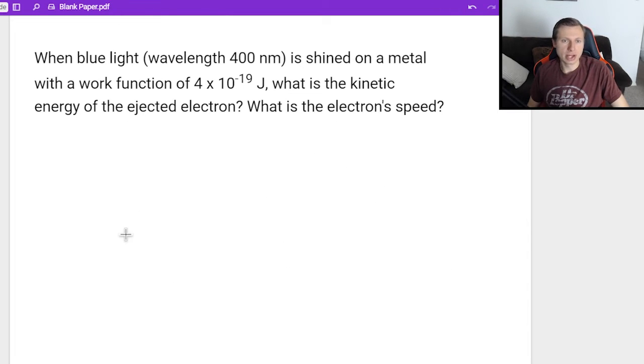Here's another one. When blue light, wavelength 400 nanometers, is shined on a metal with a work function of 4 times 10 to the minus 19th joules, what is the kinetic energy of the ejected electron? And then what is the electron speed?